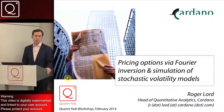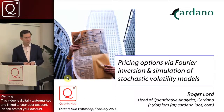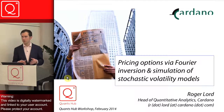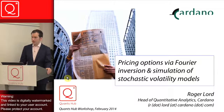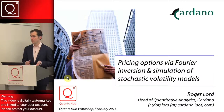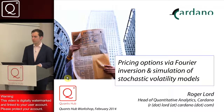The first part of the workshop on pricing options via Fourier inversion will focus on the problem where we have a model that has a characteristic function available in closed form, or one that we can calculate numerically via ordinary differential equations, and then recover European option prices using Fourier inversion techniques. The main use in my mind is to calibrate such models to the prices we observe in the derivatives markets.